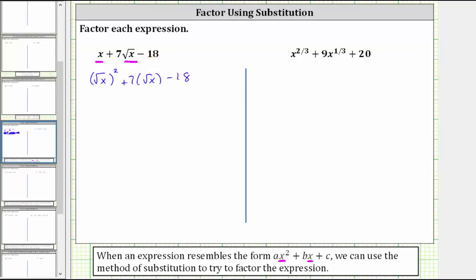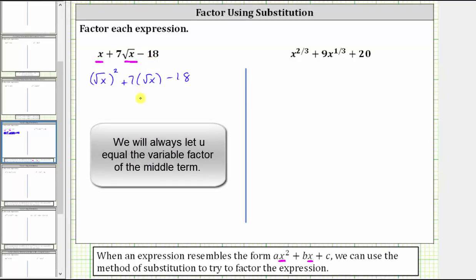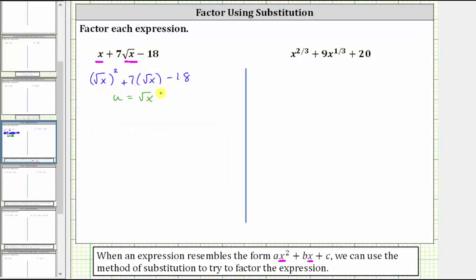Now we introduce a new variable and set it equal to the variable factor of the middle term, which in this case is the square root of x. So we will let u equal the square root of x, and now write the expression in terms of u. If u equals the square root of x, we can write the first term as u squared, and then we have plus seven u — because the square root of x is equal to u — minus 18. Now we factor this in terms of u, and write it back in terms of x.